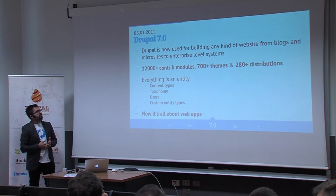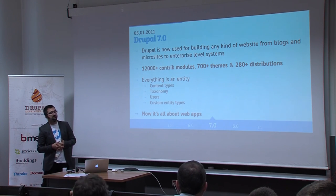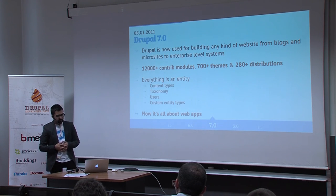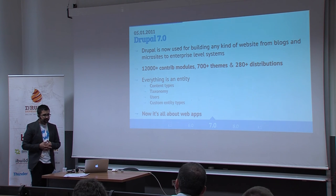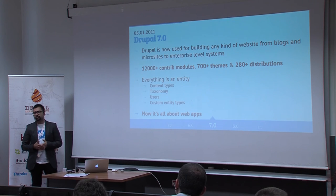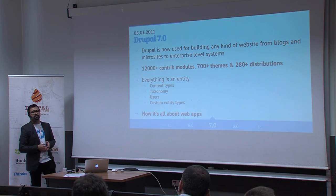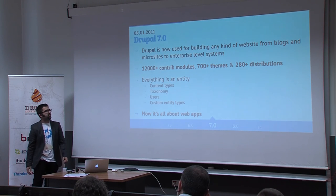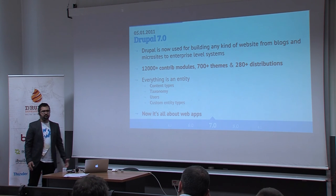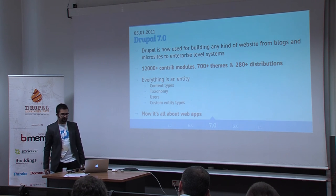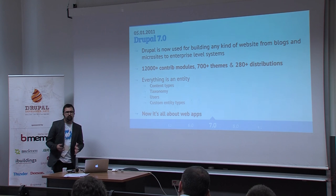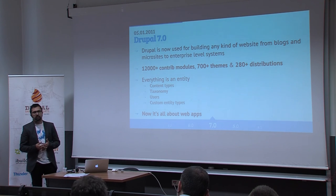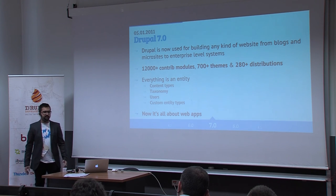Ten years after the first Drupal release, in January 2011, we got Drupal 7. Now Drupal is used to build any kind of site — from blogs and microsites to enterprise-level web applications. Currently there are over 12,000 contributed modules, more than 700 themes, and 200 distributions in the Drupal repository. We got a complete architecture switch from node to entity — now everything is an entity, from content types to taxonomy to users, and you can even create your own custom entity types. Now we can say it's all really about building web apps.